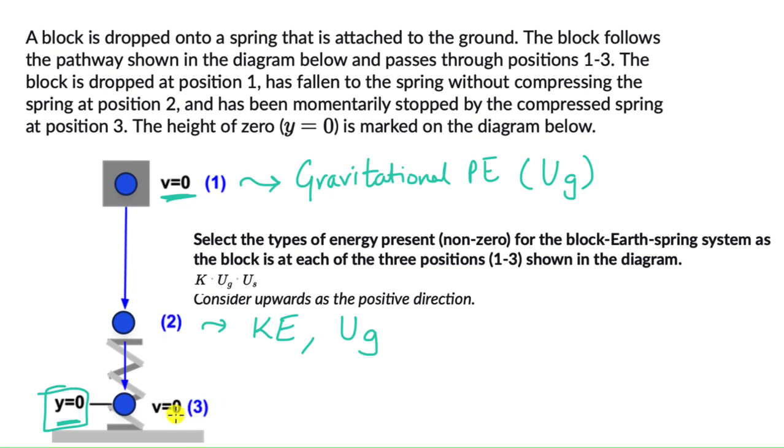At point 3, there is no velocity, so there is no kinetic energy. And there is also no height because it has reached a zero level. But at this point, the spring is completely compressed. So we can say that the system has all the energy that the system has is the elastic potential energy, or U_S.